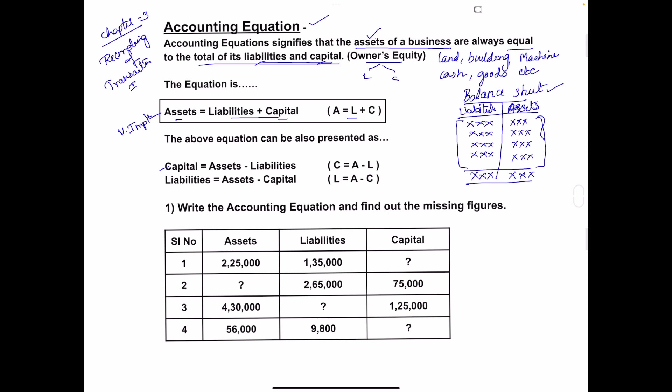From the main equation A = L + C, we can derive two more equations. To find capital: C = A minus L. To find liabilities: L = A minus C. These are the three forms of the accounting equation.